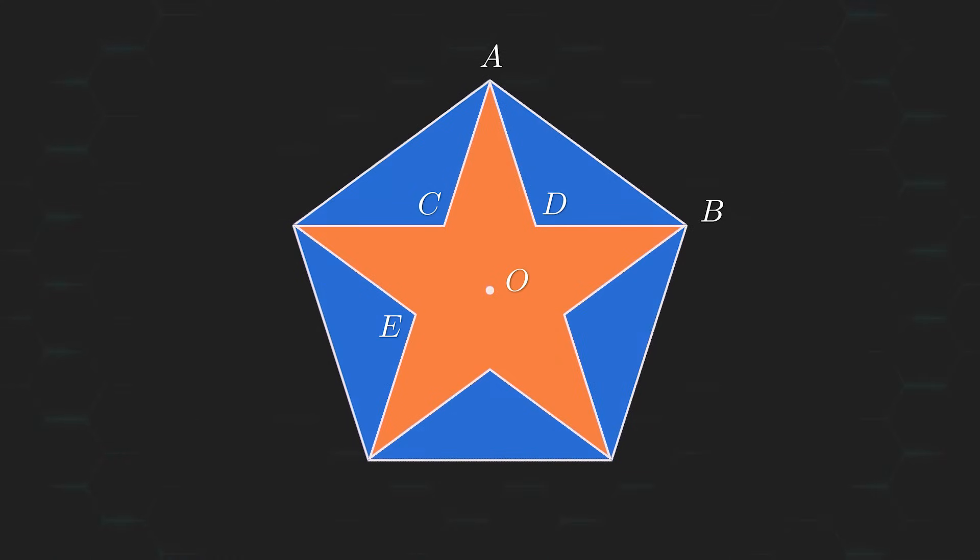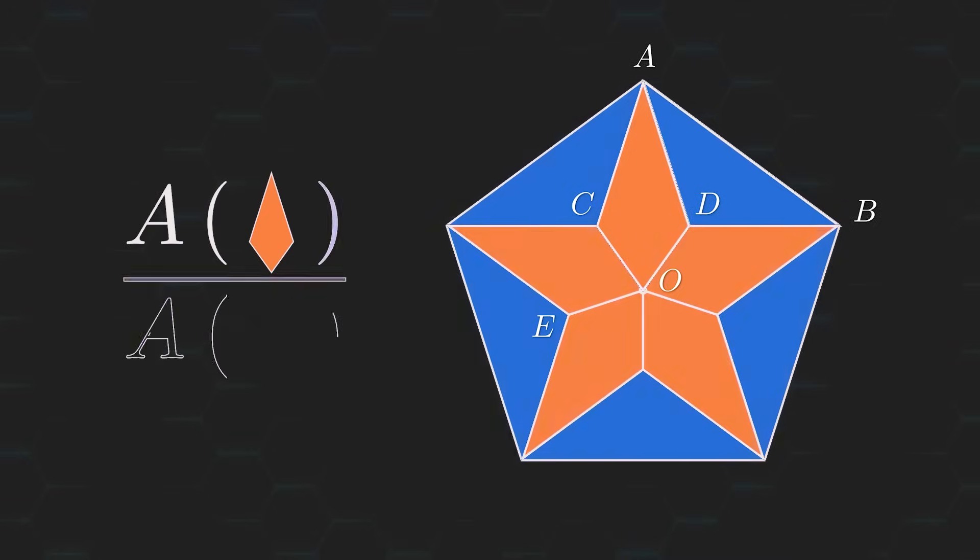The first thing to notice is that the area of the star is just five times the area of the quadrilateral ACOD. And since the area of the pentagon is equal to the area of the star plus five times the area of the triangle DAB, then all we really need to do is compare the areas of these two shapes.